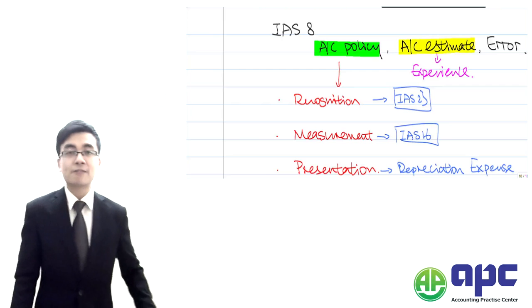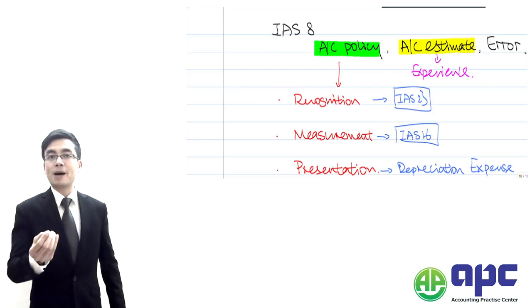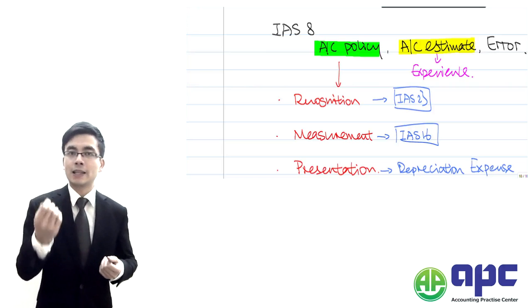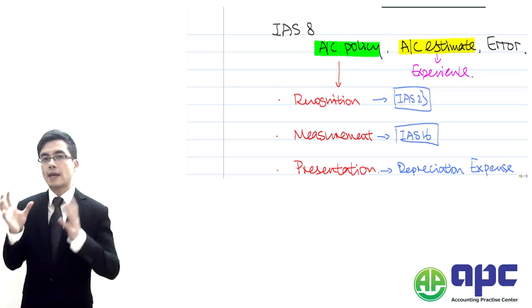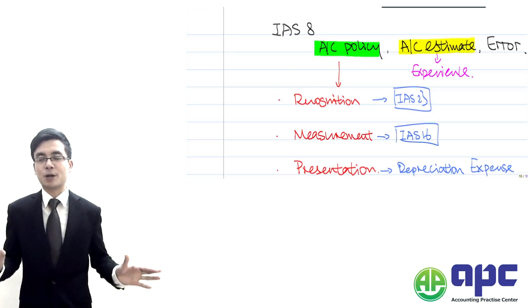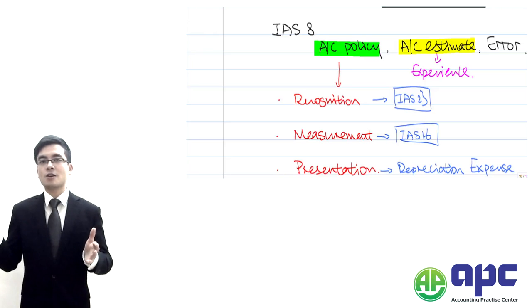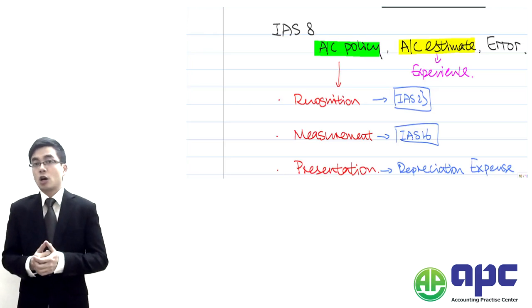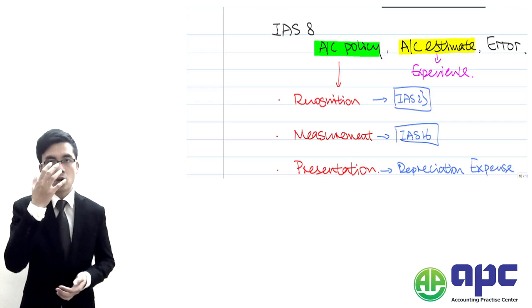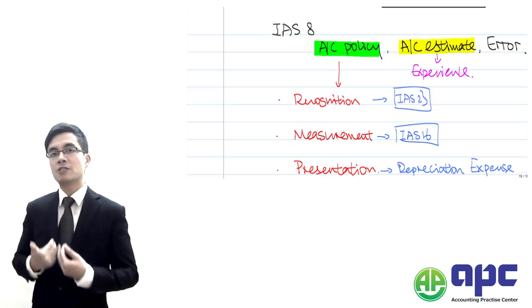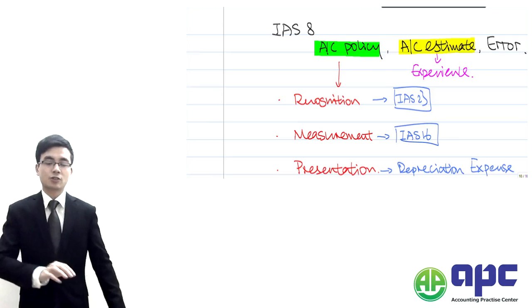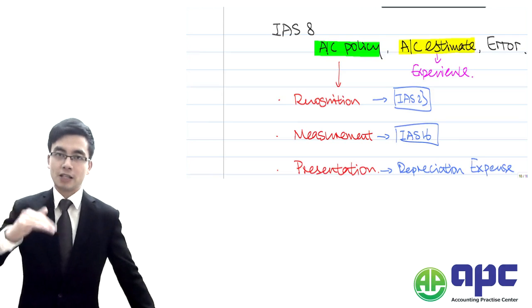For example, at APC we're measuring bad debt expense. Before that, we estimate the allowance for doubtful debts. For APC we are an education company, so it's very unlikely for a customer to delay their payment or default because we always require the customer to give us money first before we give them classes.